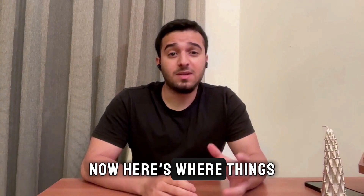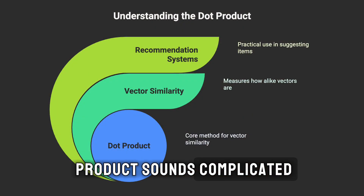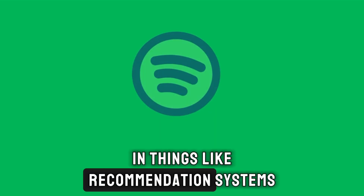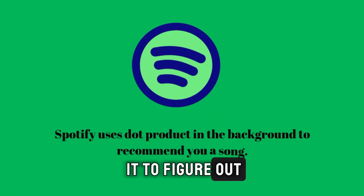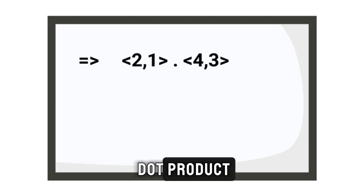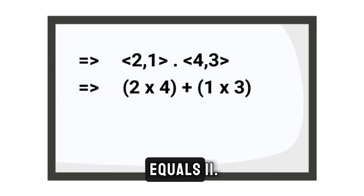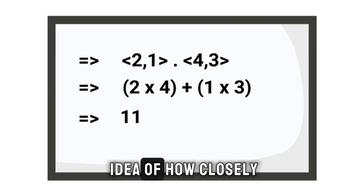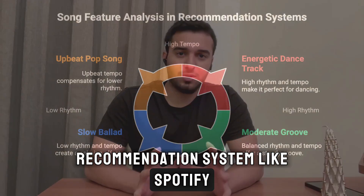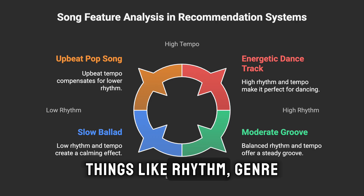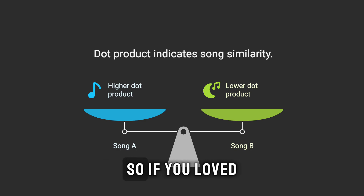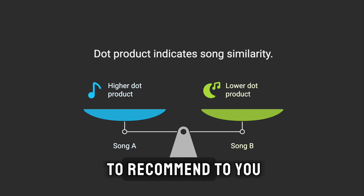Now here's where things get really cool — something called the dot product. It's actually just multiplying two vectors in a special way to figure out how similar or different they are. This is super useful in things like recommendation systems. Say we have two vectors, 2 comma 1 and 4 comma 3. The dot product is 2 multiplied by 4 plus 1 multiplied by 3, which equals 11. This single number gives us an idea of how closely these vectors align. For example, in Spotify, each vector might represent a song's features — rhythm, genre, artist style, and tempo. A higher dot product between two songs' vectors means the songs are similar, so Spotify recommends one if you loved the other.